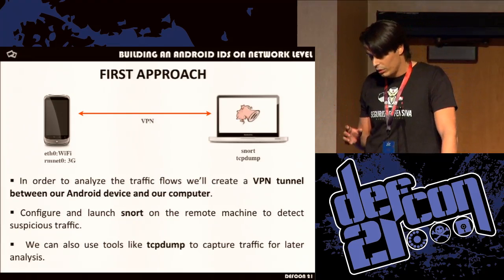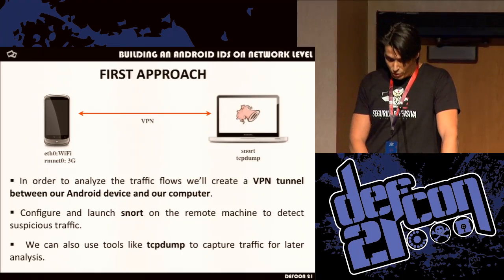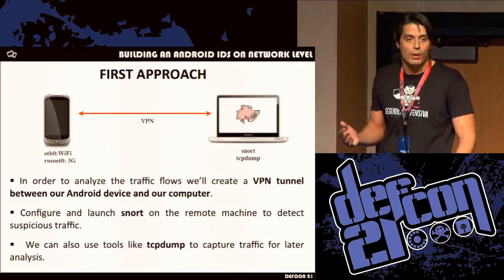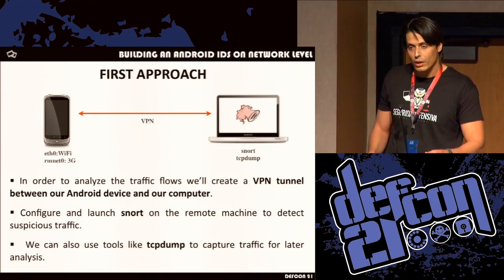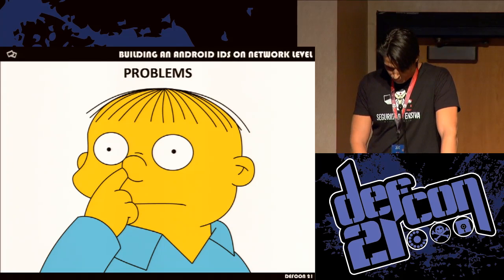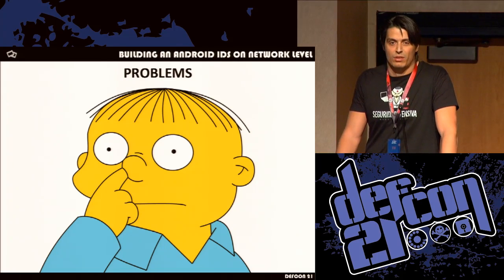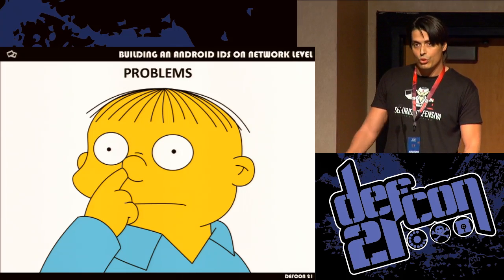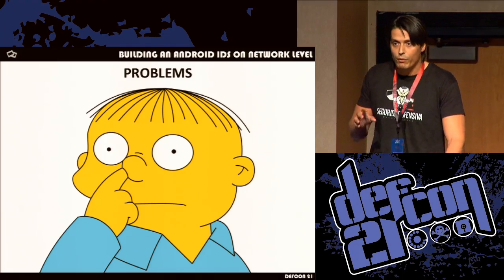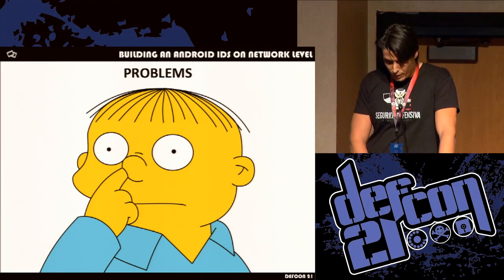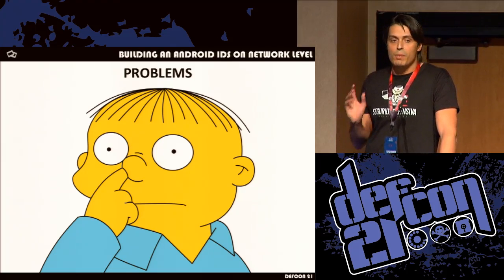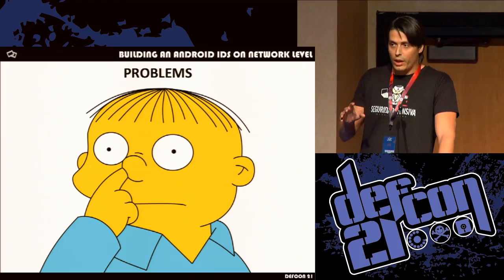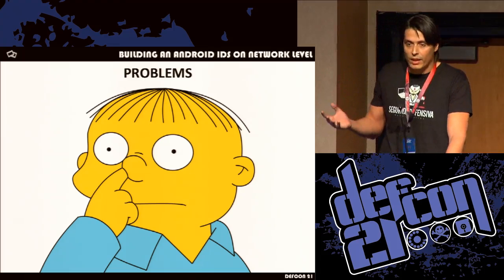I launched Snort on my computer to detect suspicious traffic, and I could also use tools like tcpdump and do forensic analysis. But this idea has problems — I have to take traffic from my mobile phone to my computer, which is a waste of bandwidth. I couldn't act like an IPS. I could detect attacks and malware, but only after it happened. So that had no sense for me.